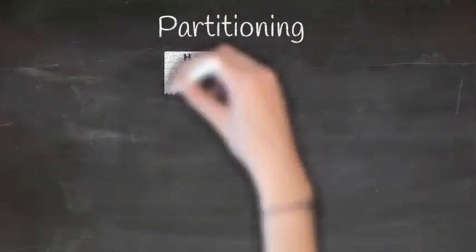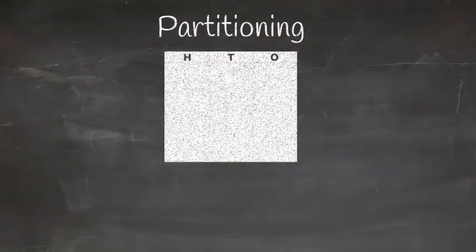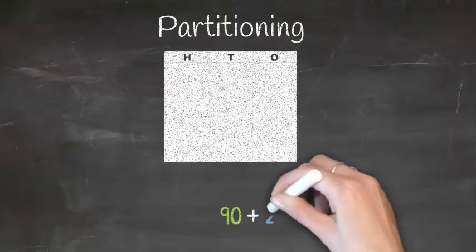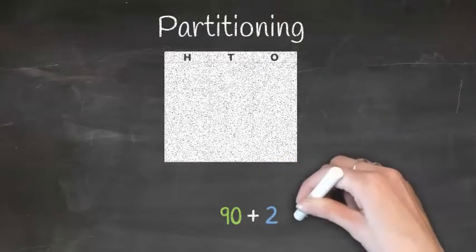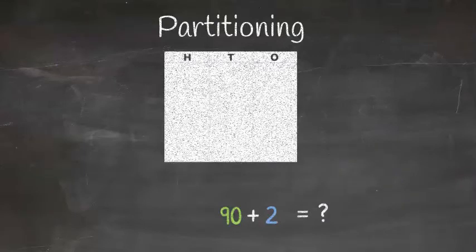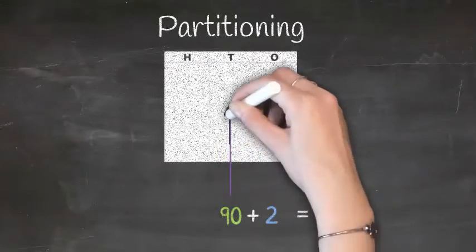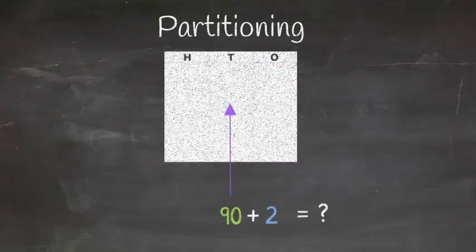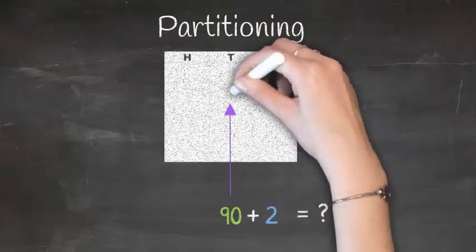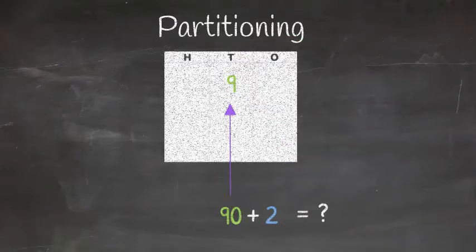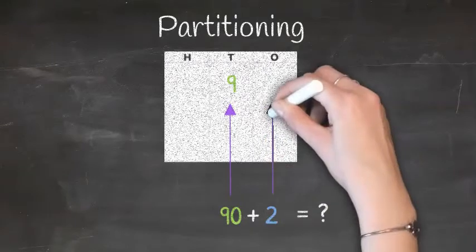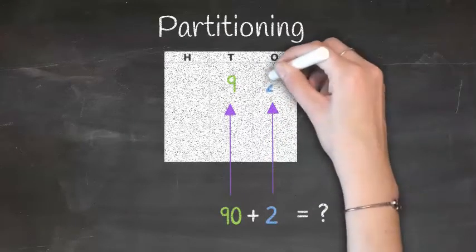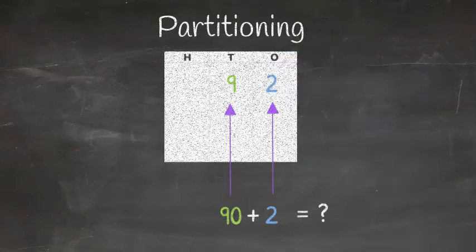Okay, let's try doing this the opposite way. 90 plus 2 equals... Let's put these already partitioned numbers on our place value chart. Pause the video here if you want to work it out for yourself first. 90 is the same as 9 tens. So, we write 9 in the tens column. Then, we bring the 2 into the ones column. This equals 92.